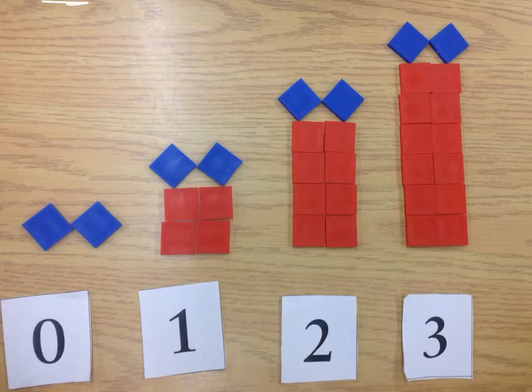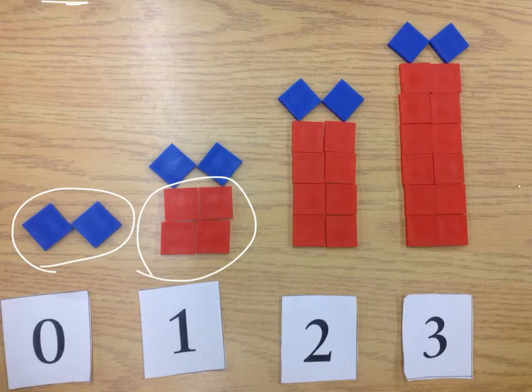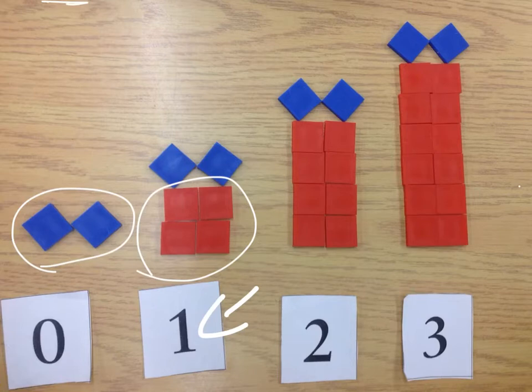In this pattern, the blue tiles are a constant and the red tiles are a multiplier. The way to find your multiplier is to look at your position card and see how many times that number is being multiplied to get your number of tiles.